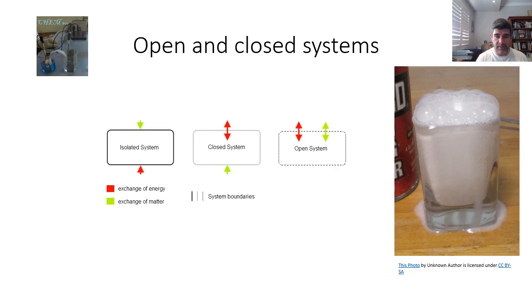But more often, systems are closed or open. In a closed system, energy can escape or be transferred to or from the surroundings, but the matter remains inside. So these are very good systems to use to determine the conservation of mass law.